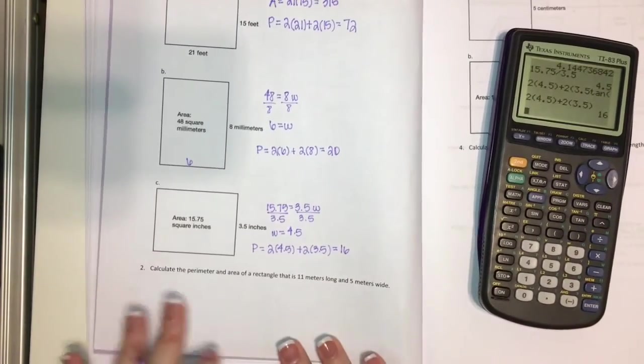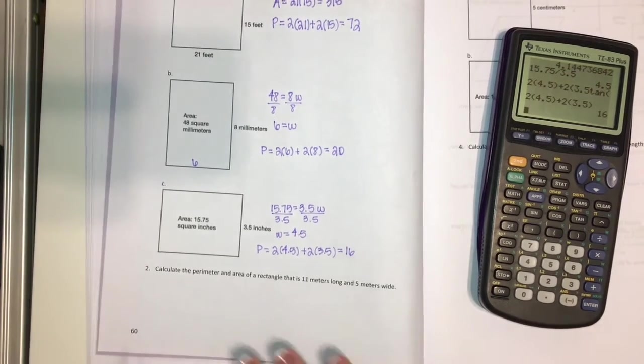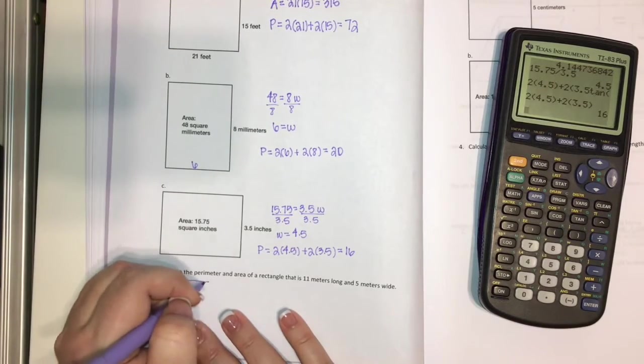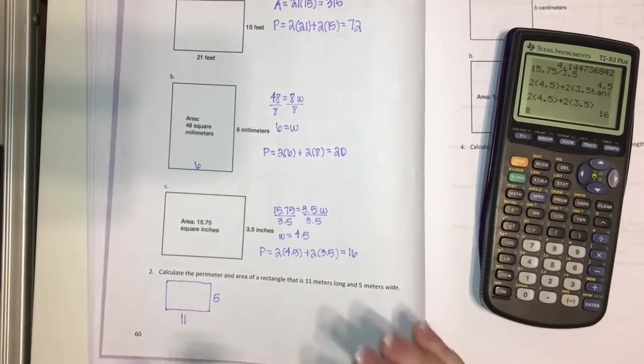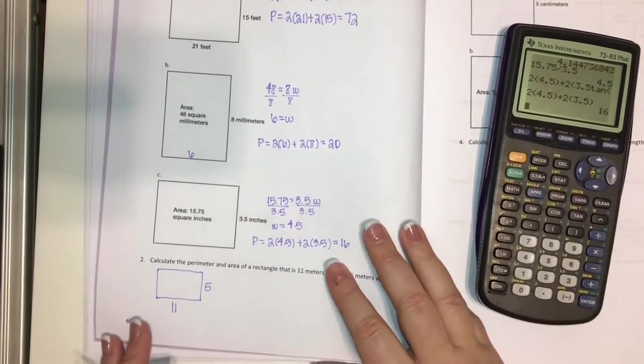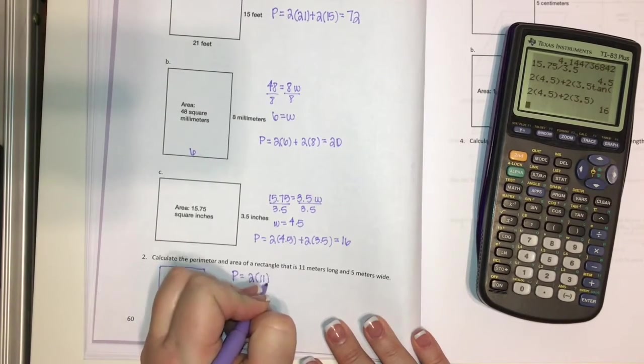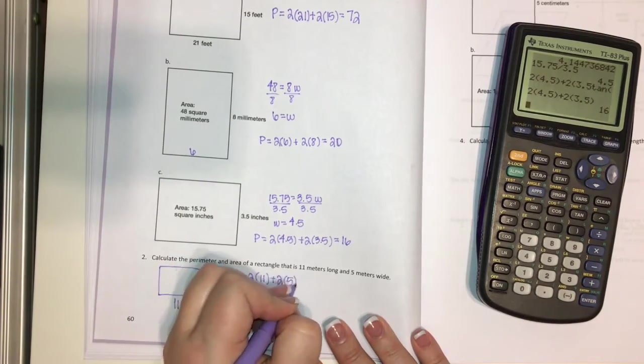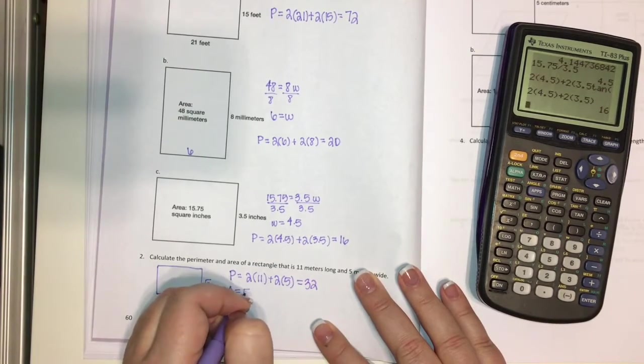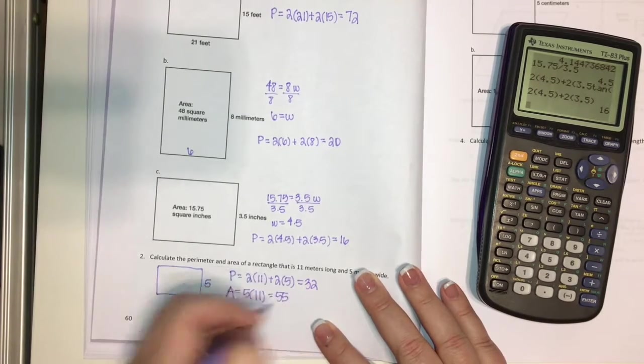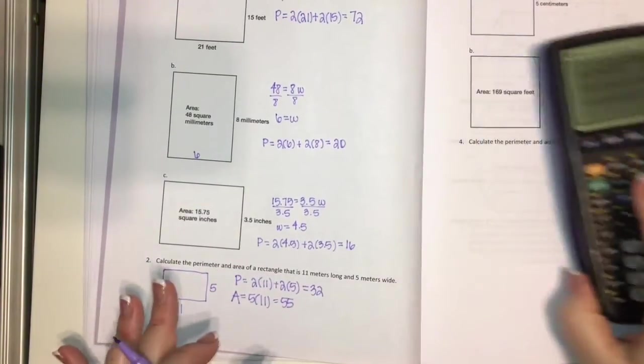Now this last problem, it says calculate the perimeter and area of a rectangle that is 11 meters long and 5 meters wide. What I like to do for problems like this is just sketch the picture so we can get a good understanding. So this is 11, this is 5, that makes a lot more sense in my brain once I have this little picture here. So the perimeter, now this makes this really easy. It's just 2 times 11 plus 2 times 5 and I believe we'll get 32. And then the area is just going to be 5 times 11, which is 55. So when it's just a word problem, draw your picture, always draw a picture.